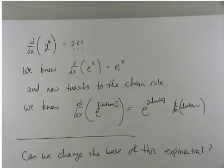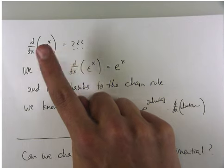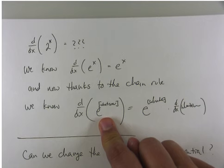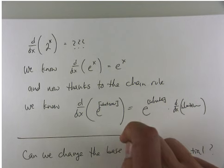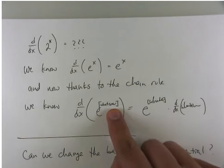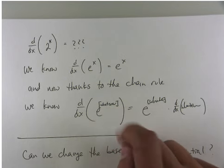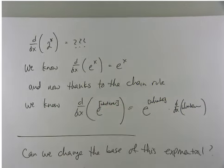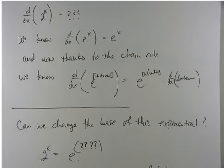Here's a question I might ask myself: can I change the base of this exponential function? It's 2 to the x. Can I write 2 to the x as an exponential expression in e? I don't like 2 to the x. Can I write e to the something instead of 2 to the something? The something will probably have to change, because 2 to the x and e to the x are not the same thing. But can 2 to the x be written as e to the some stuff? 2 to the x is e to the what?